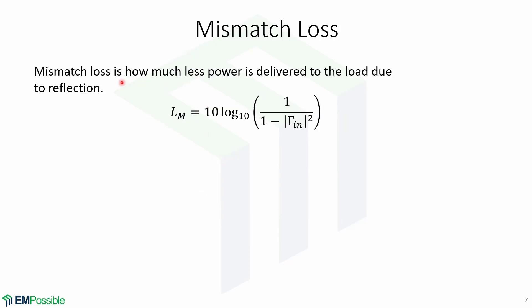Now, mismatch loss is how much less power is delivered to the load due to reflection. It is given by LM and is equal to 10 log base 10 of this expression.